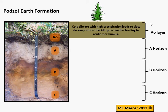When you're answering a question like this, it's logical to start at the AO layer and work your way downwards. I want you to imagine a cold climate with high precipitation, possibly at a higher altitude, and these conditions lead to slow decomposition. The forest environment you could imagine here would have conifer trees, which have pine needles. When these fall from the trees, they actually add to the acidity of the humus, leading to a more acidic humus.